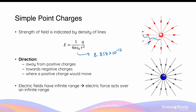This inversely proportional relationship can also be demonstrated by looking at the density of the field lines. The arrows are closer together — higher density — when very close to the charge. As the lines move radially from the charge, they become further apart, lower density, indicating a decreasing field strength.